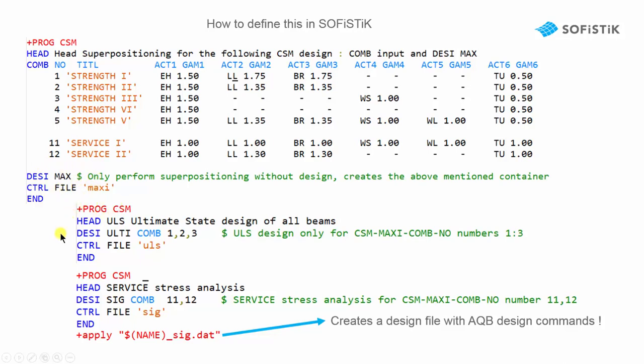Then we have a little input, maybe for a CSM design on ultimate limit. And we tell the program to use the combinations 1 to 3 for this ultimate limit design.